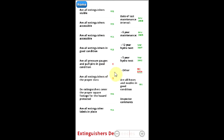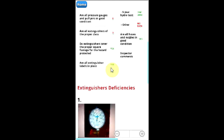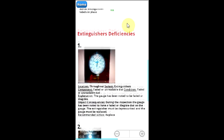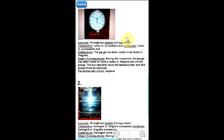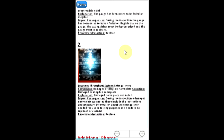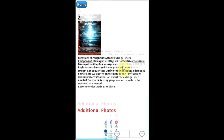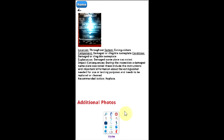The items that you have not selected will be indicated by a red X or a red no data. These items will not show up on your report. Down below this, your deficiencies and additional photos will populate. Return to the home screen through this icon.